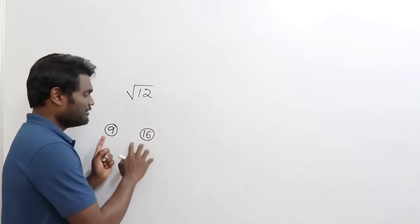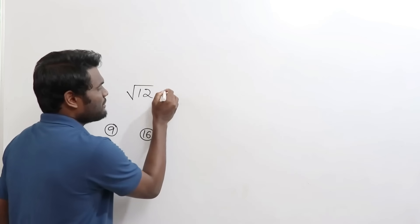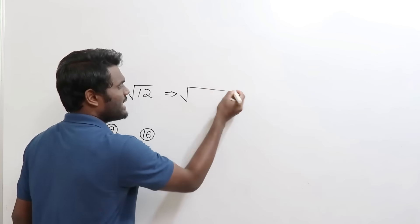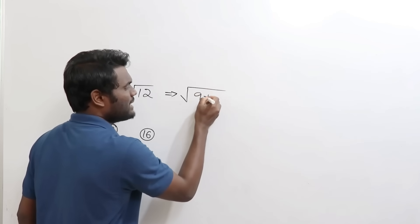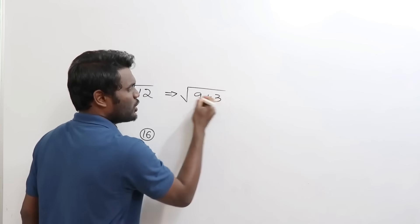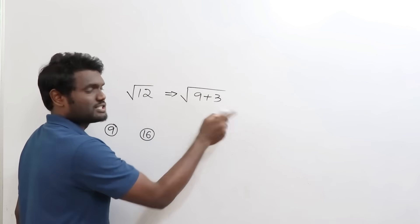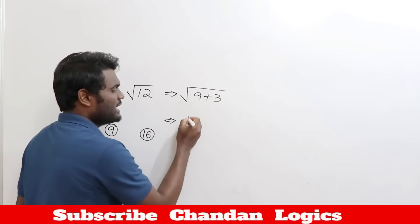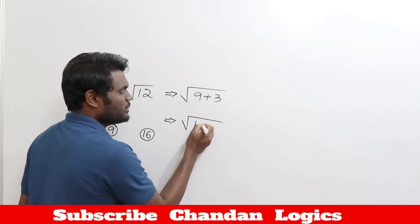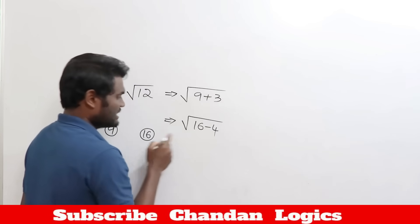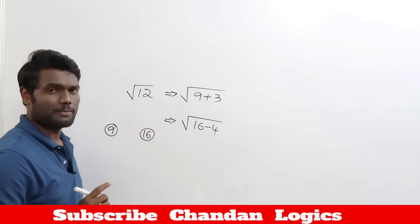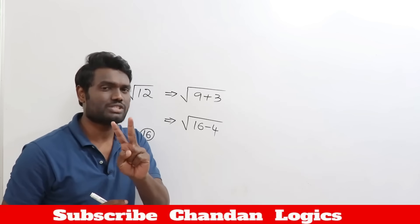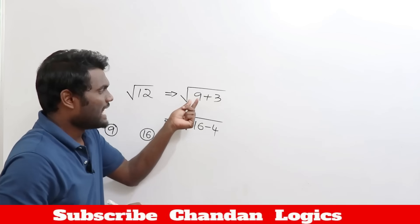You can write 12 in terms of 9 or in terms of 16 — either will give us the same answer. I'll show you both. In terms of 9, this will be 9 plus 3. In terms of 16, this will be 16 minus 4. Both equal 12. It's just two simple steps.